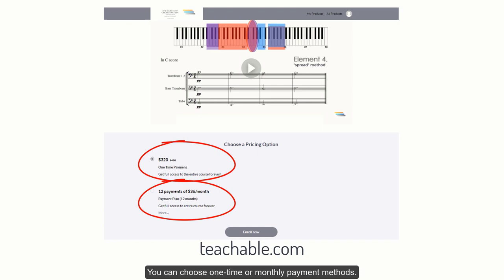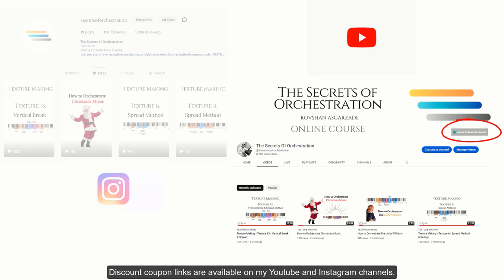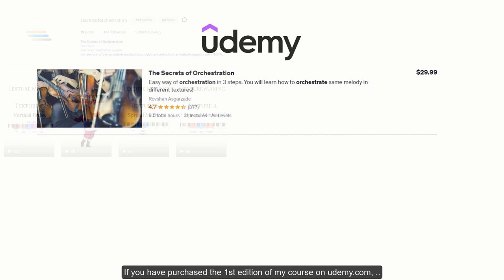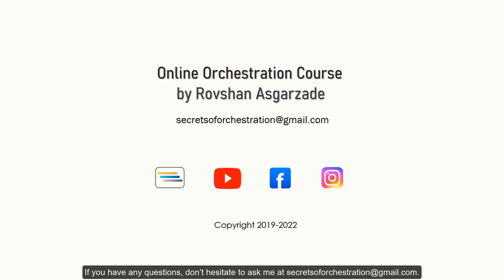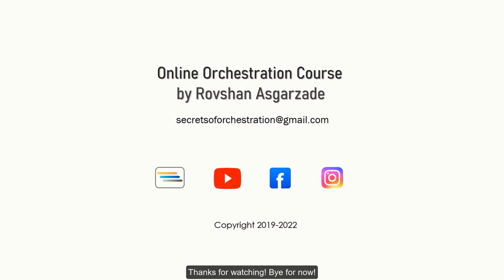If you liked this lecture and want to learn more about these masses and create different textures of the melody, let's enroll in the course. You can choose one-time or monthly payment masses. Discount coupon links are available on my YouTube and Instagram channels. If you have purchased the first edition of my course on udemy.com, you can send a request to the following email and get an extra discount. If you have any questions, don't hesitate to ask me at secretsoforchestration at gmail.com. Thanks for watching. Bye for now.